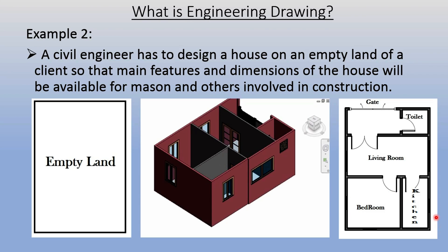The plan is actually the top view of the home. In civil engineering terms, the top view is called the plan — you may have heard this word if you have been to construction sites. The top view of this 3D model is called the plan, and it is provided by the civil engineer. Just by seeing this paper, anyone from the architectural or construction side can easily imagine this home.